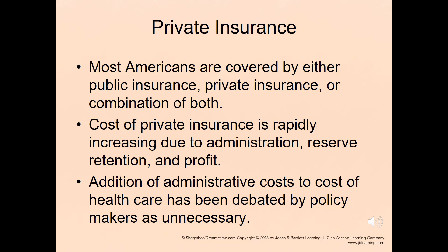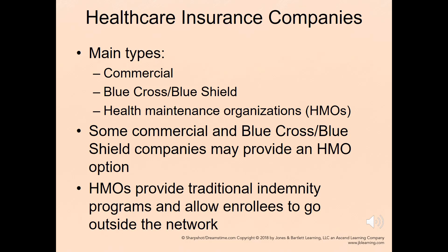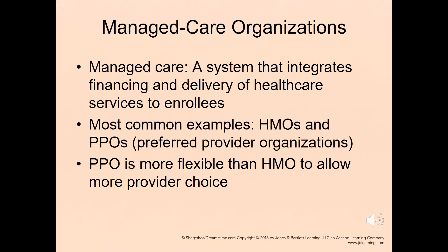Most Americans are covered by either public insurance, private insurance, or a combination of both. The cost of private insurance is rapidly increasing due to administration, reserve retention, and profit. There are many types of healthcare insurance companies — commercial, Blue Cross Blue Shield, or health maintenance organizations. Some commercial and Blue Cross Blue Shield companies also provide an HMO option. HMOs provide traditional indemnity programs that allow enrollees to go outside the network. Managed care integrates financing and delivery of healthcare services to enrollees; the most common examples are HMOs and PPOs, with PPOs being more flexible than HMOs in allowing more provider choice.